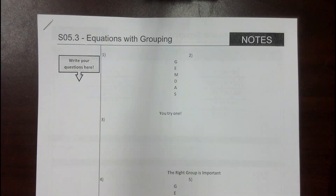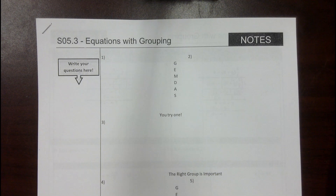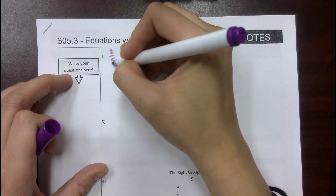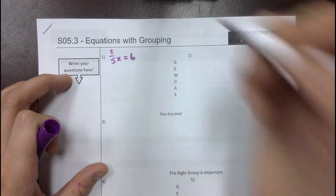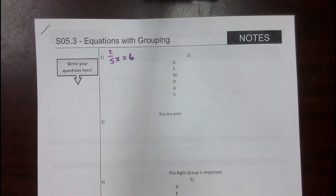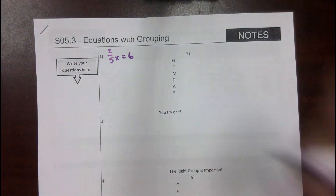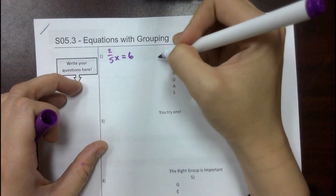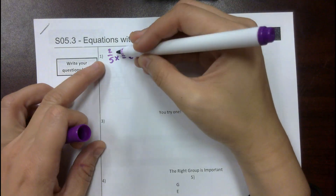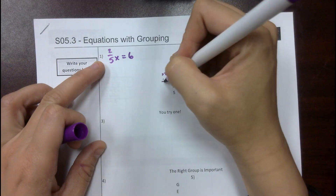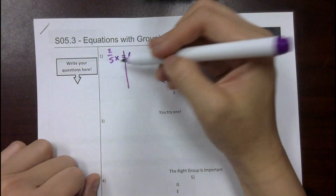Equations with grouping — this is like more than two-step equations, but it's the same thing. As long as you're good at checking, you'll be fine. Number one is (2/5)x equals 6. We can think of this fraction as a group — it's like multiplying by 2 and dividing by 5, so it's like two steps.